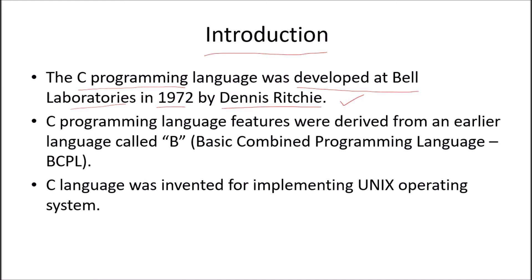C programming language features were derived from an earlier language called B. There was a B language which was developed earlier, out of which C was taken. There is also BCPL, which is part of the B language — that is Basic Combined Programming Language. These things are important to know.